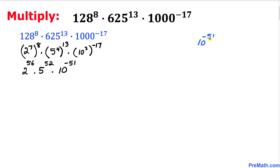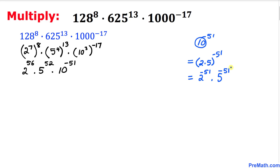Now let's focus on 10 power negative 51. The base 10 can be written as 2 times 5, so 10 power negative 51 becomes (2 times 5) power negative 51. We can break this down as 2 power negative 51 times 5 power negative 51.